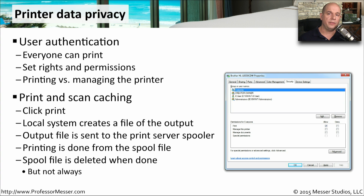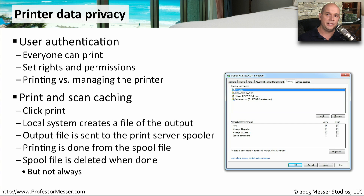You also need to be aware that the information you're sending to these multi-function devices is being stored out on the network — this is especially important if you are printing or scanning sensitive information. There's usually a cache on the device, either in memory or other storage, where information is queued before printing. Your local OS creates the print job and sends it to the spooler on the printer, where it sits until the printing process is complete. Usually once the printout is finished, the job is removed from the spooler and deleted from the printer — but not all printers will delete the job.